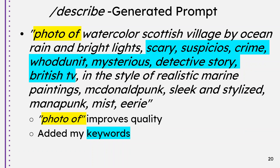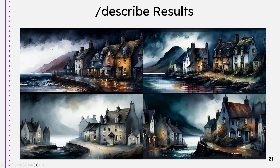Here is a describe-generated prompt. I added words because I wanted to draw something related to British TV, which I love and watch every night. I added 'photo of' or 'photo realistic' and 'real' — 'real' is a really strong word — plus the highlighted keywords. The result is a Scottish village generated from this prompt. You can see it doesn't look like a photo at all, but the quality is better with that modifier.